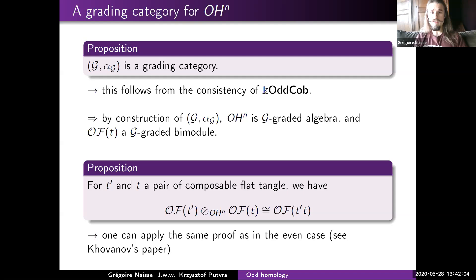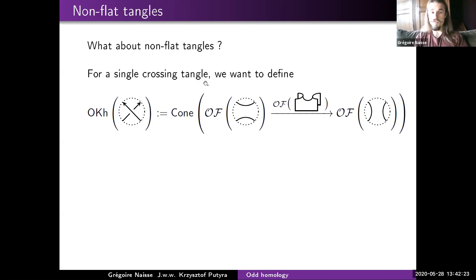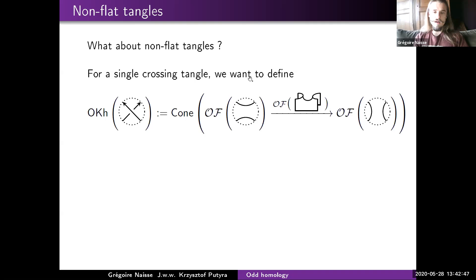We are now happy because we can take tensor products of flat tangles and everything works. But in general you are not interested in invariants of flat tangles — you want actual tangles with crossings. For a single crossing tangle, you want to define the associated space as the mapping cone of a map from the space of the 0-smoothing to the space of the 1-smoothing over a chronological cobordism, placing the 0-smoothing space in homological degree one.